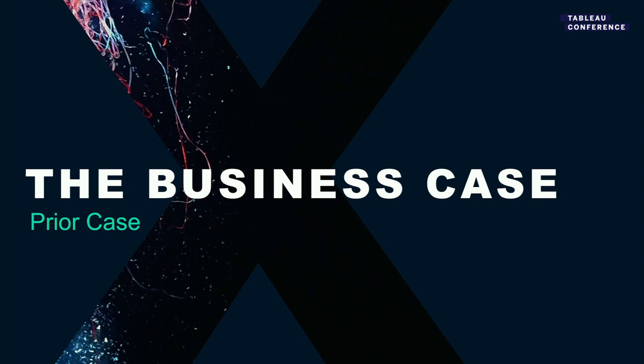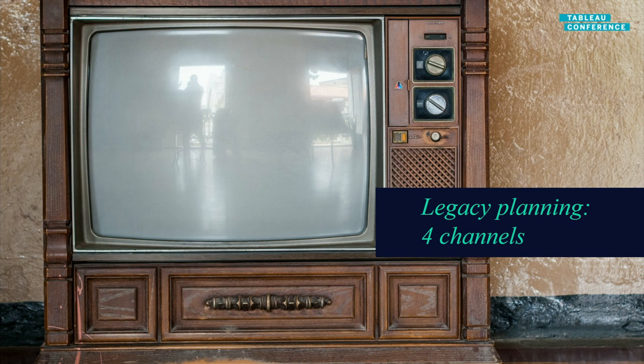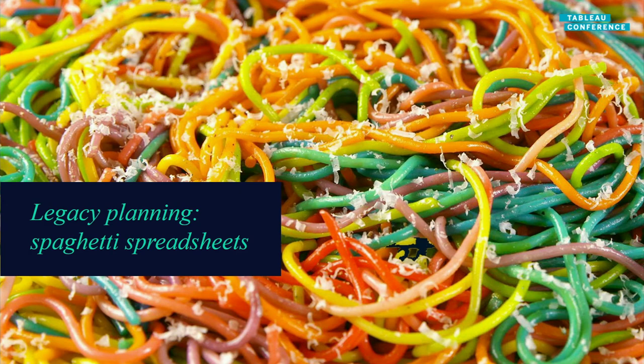Now we get to the meat of it — the business case, the prior state, how we got a rolling forecast. The old world: we only had four channels, only 18 states. Everything was completely Excel spreadsheets, personal emails going back and forth, spreadsheets linked to other spreadsheets. Sometimes you wouldn't have access to a drive. You'd try to reverse-engineer it to understand what to do and where to go — it was a complete mess.